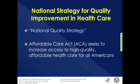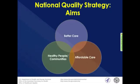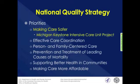I want to move into two new initiatives released from HHS. The first is the National Strategy for Quality Improvement in Healthcare, better known as the National Quality Strategy. This strategy was mandated through the Affordable Care Act, which seeks to increase access to high-quality, affordable healthcare for all Americans. There are three major aims: better care, more affordable care, and healthy people in healthy communities. One of the seven priority areas is making care safer, addressing patient safety concerns including healthcare-associated infections. Notably, the Michigan Keystone Intensive Care Unit project was enumerated in the National Quality Strategy under the making care safer component.